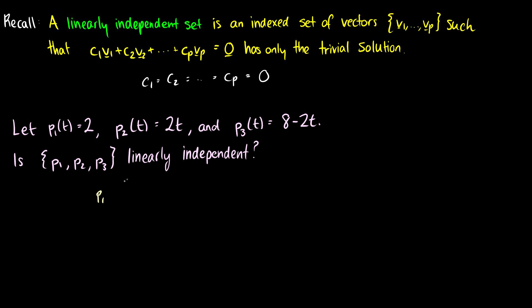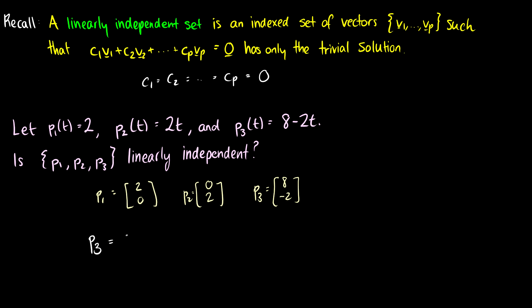We can write p1 as (2, 0), p2 as (0, 2), and p3 as (8, -2). Written this way, we can clearly see that these are not linearly independent — there are only two entries in each vector and we have three vectors. We can write p3 as 4p1 minus p2, so this set is linearly dependent.